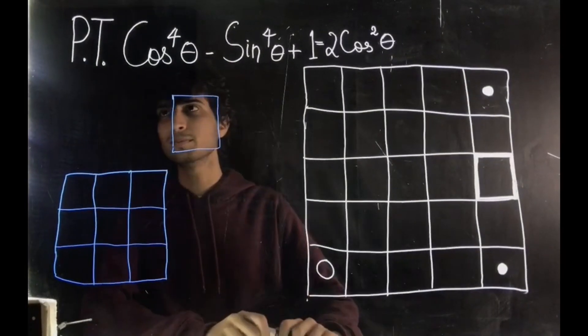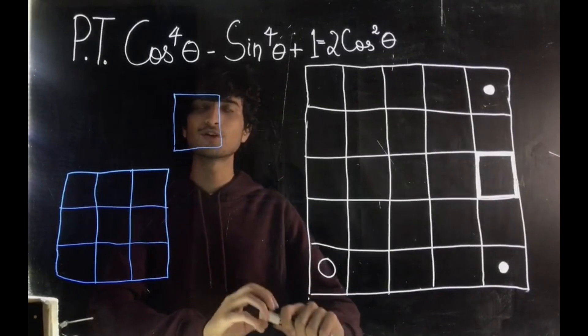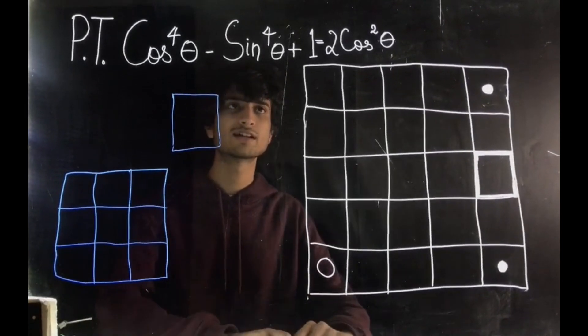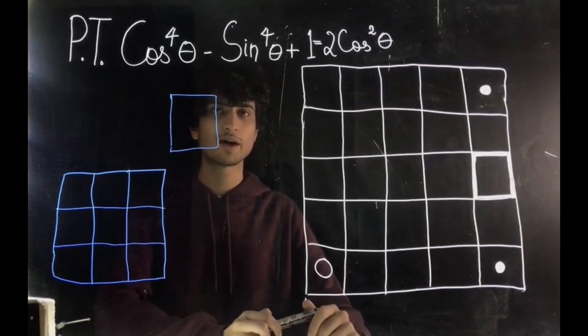So here on the top we have a problem. Prove that cos to the power 4 theta minus sin to the power 4 theta plus 1 is equal to 2 cos square theta.